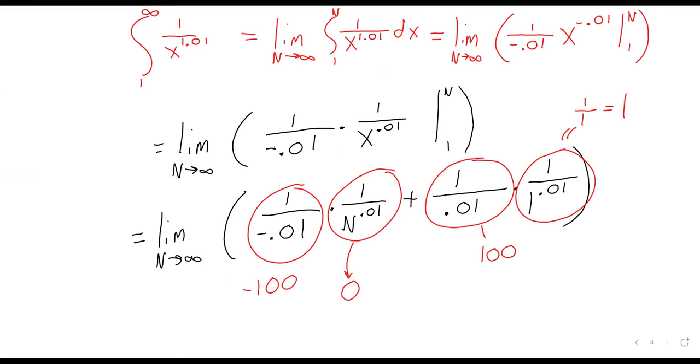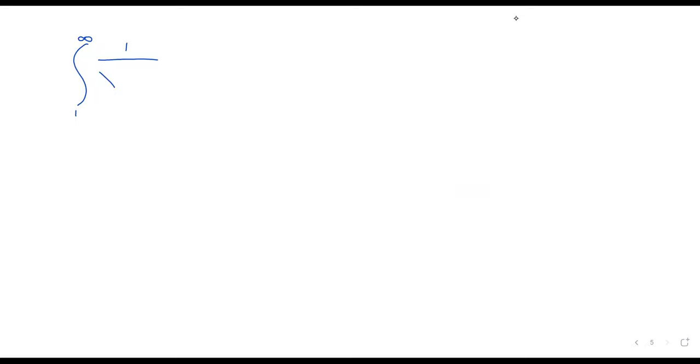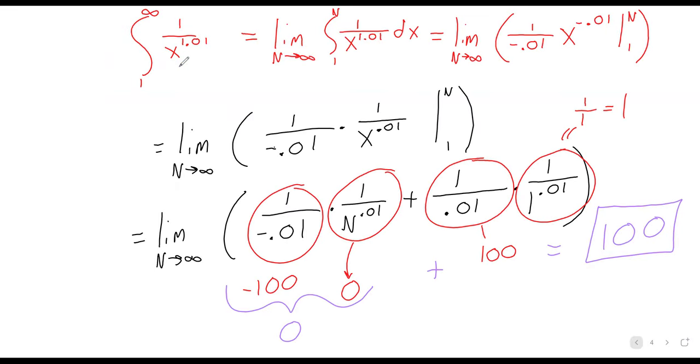Then any number times zero is zero. So zero plus a hundred equals a hundred. It's a finite number. On the other hand, going from one to infinity, let's go one over x to the 0.99. I said that one was a cutoff. We looked at a power that was just a little bigger than one. Let's look at a power that's just a little less than one.